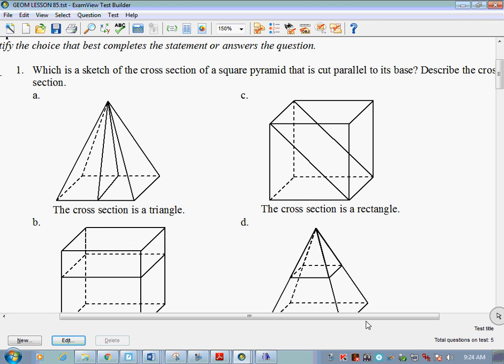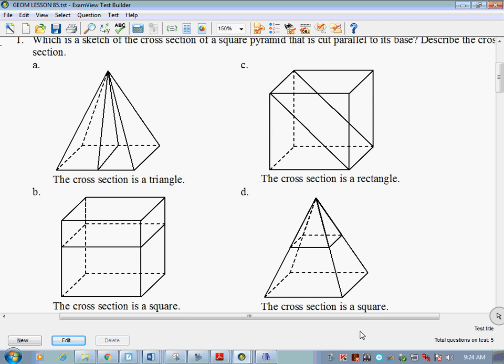Let's go into some of our problems. Our first question says which is a sketch of the cross-section of a square pyramid that is cut parallel to its base. First off, let's start with the three-dimensional figure. Which of these is a square pyramid? A and D. Which of them has a plane that is running parallel to the base? D. Now what we're talking about is when that plane cuts it, what is the shape left over?